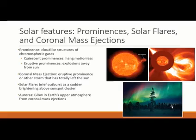We also can have prominences which are where we have chromospheric gases in a cloud-like structure. So if they're quiescent, that means they're hanging motionless. If they're eruptive, they explode away from the sun. So those are the ones that are more interesting to look at. Coronal mass ejection is when we have one of those eruptive prominences, or another storm that completely leaves the sun. So it's no longer attached to the sun. A solar flare is an outburst of brightening above a sunspot cluster. So we suddenly get a bright spot above a cluster. On the earth, we will see auroras at the North Pole and the South Pole. So this is a glow in the upper atmosphere that is due to a coronal mass ejection that's interacting with our atmosphere. They are rather impressive to see.